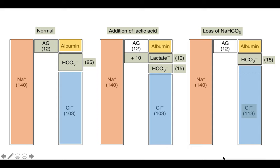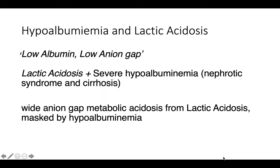Even if you see a normal pH and normal anion gap with hyperchloraemia on the blood gas, you still need to check whether lactates are actually increased. A normal anion gap does not mean there is no lactic acidosis present. Always look for lactates — normal anion gap does not rule out metabolic acidosis.